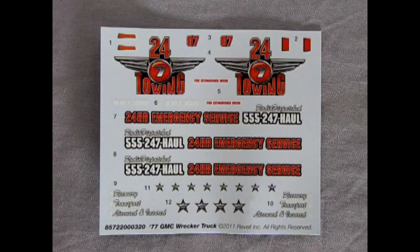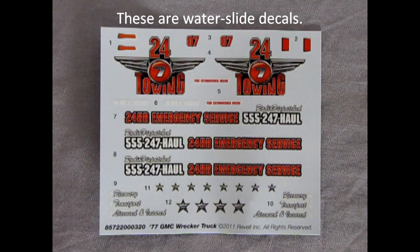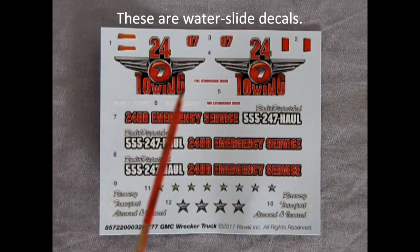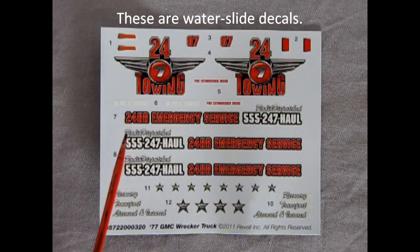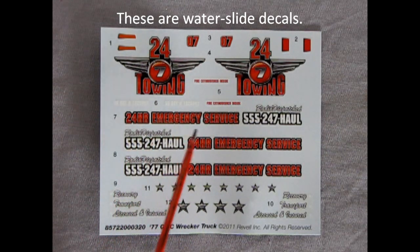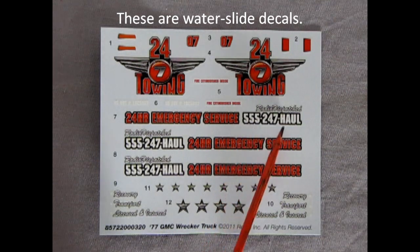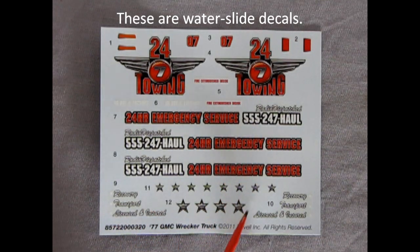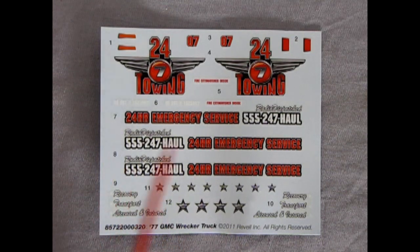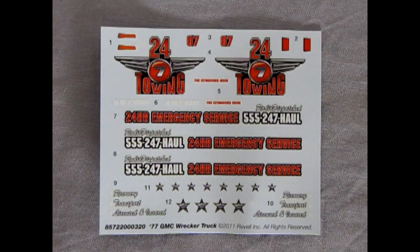And finally here are the decals for our tow truck and as you can see we've got the 24-7 towing symbol on the side. You got the 07 number here and then our 24-hour emergency services number and our phone number for our tow truck and again all these cool little stars and different names and other scripts on the side. So again a very cool looking decal sheet which will really dress up this model.